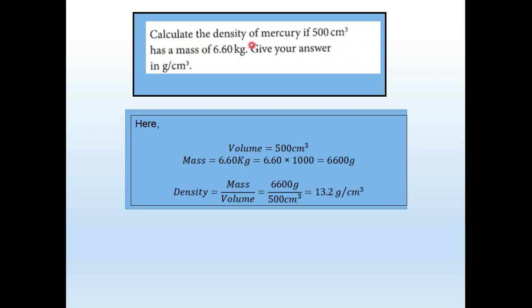Here we have to calculate density. The volume is given as 500 cm³ and the mass is given as 6.60 kilograms. Since these are from different unit systems — CGS and MKS — convert the mass to grams: 6600 grams. Density equals mass divided by volume, which gives 13.2 grams per centimeter cube.